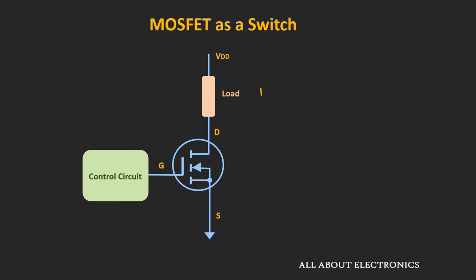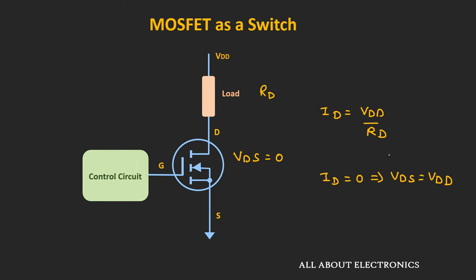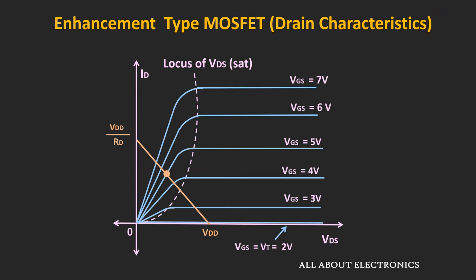For example, let's say Rd is the load resistance. In the worst case, assuming Vds is equal to 0, the maximum current through the load will be equal to Vdd divided by Rd. And whenever the switch is in the open condition, or when the drain current Id is equal to 0, the voltage Vds is equal to Vdd. For these two extreme cases, we get two points, and by joining them we can get the load line. The intersection of the load line with any of the curves gives the operating point — if operating at Vgs equal to 5V, the intersection point should fall such that the MOSFET operates in the linear region.